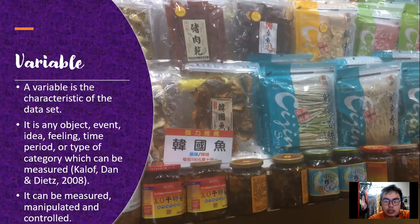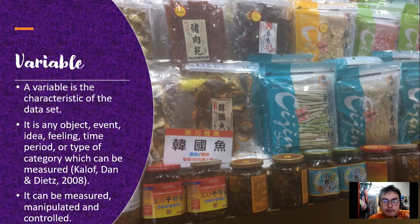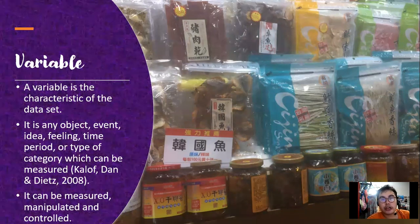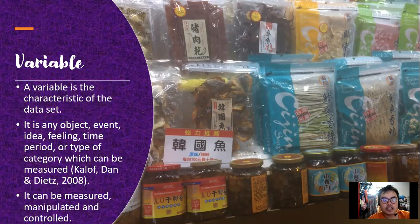When we say a variable, it is the characteristic of the dataset. It is used to be measured, manipulated, or controlled in doing our research. It is any object, event, idea, feeling, time period, or type of category which can be measured, according to Kelow, Dan, and Dietz 2008. Variables are needed in research because these are the objects we want to study, examine, evaluate, and measure.